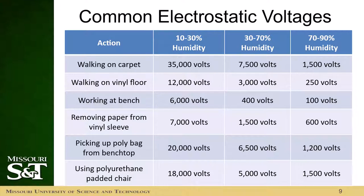Here is a table showing some common electrostatic voltages. You'll see that these are separated by humidity — the lower the humidity, the higher the voltages. It's important that we try to keep the humidity in the lab as high as we can. To do this, we'll have a humidifier in there, especially in the winter months. All the actions shown in the table can cause electrostatic voltages to build up, and these are all things you might be doing in the lab.